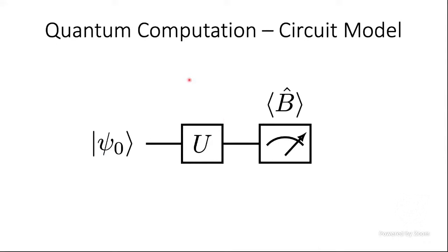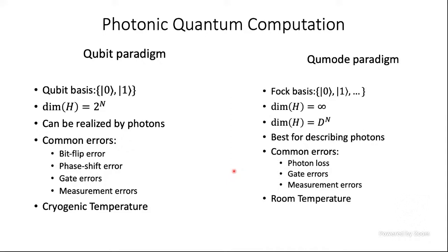In our project we use the circuit model of quantum computation, which means we have an initial quantum state — the ground state or, in the photonic context, the vacuum state. We apply some unitary operation, which can be very large and complex, and after that we measure some observable. The goal is to build this unitary operator such that after measurement we get the right result. In the qubit model, states are zero and one, any superposition thereof, and the Hilbert space dimension is 2^n where n is the number of qubits.